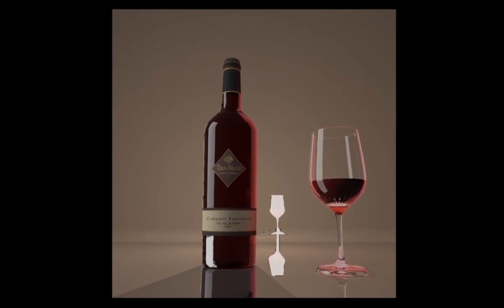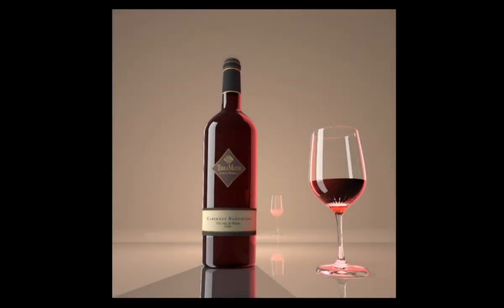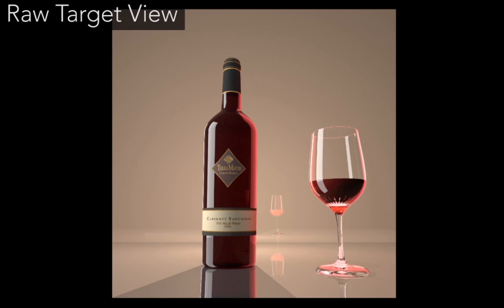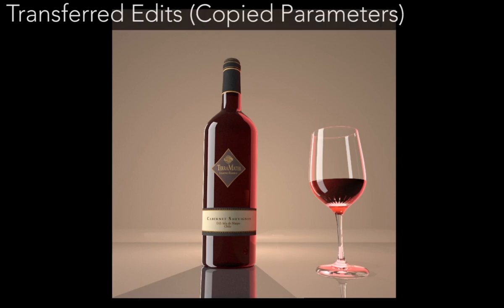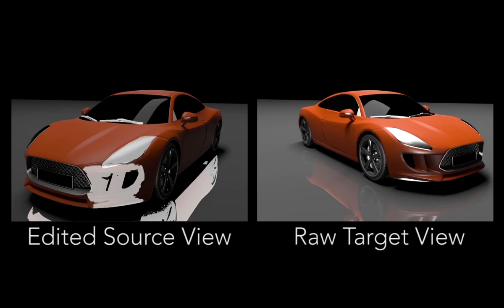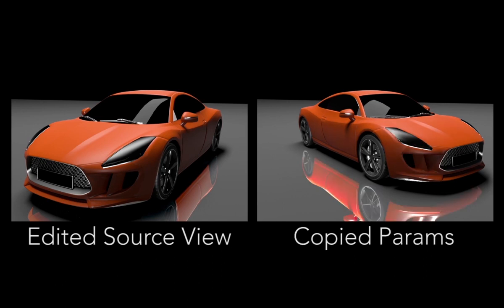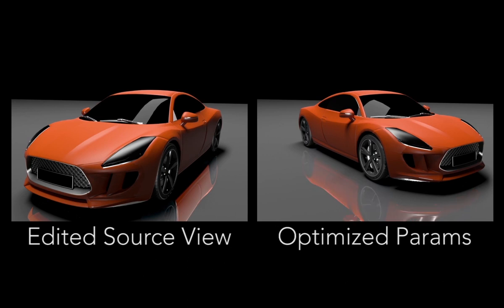Please see the paper for details. Given the transferred masks, in many cases we can simply copy the edit parameters from the original edits to produce a plausible result. But sometimes the original parameters are not appropriate for the new scene. Here we create several local edits to parts of the car image, and the relevant masks get transferred correctly to the new view. But copying the parameters directly makes the ground reflection far too bright. Our system automatically optimizes the parameters for each mask, which produces a better result.